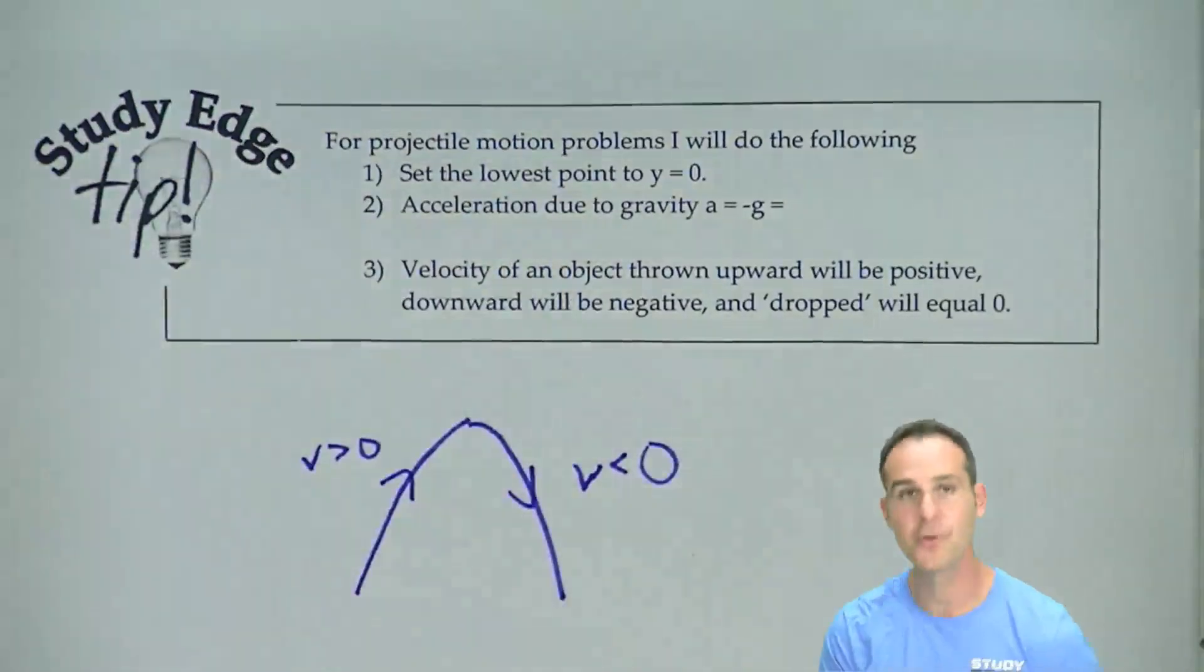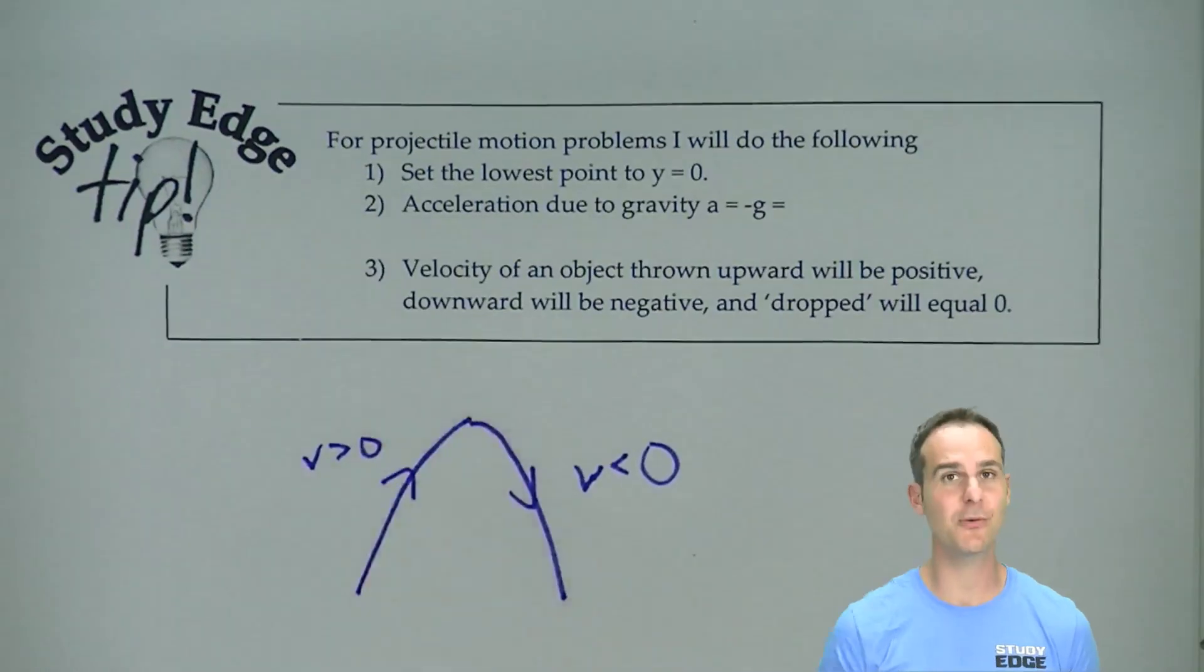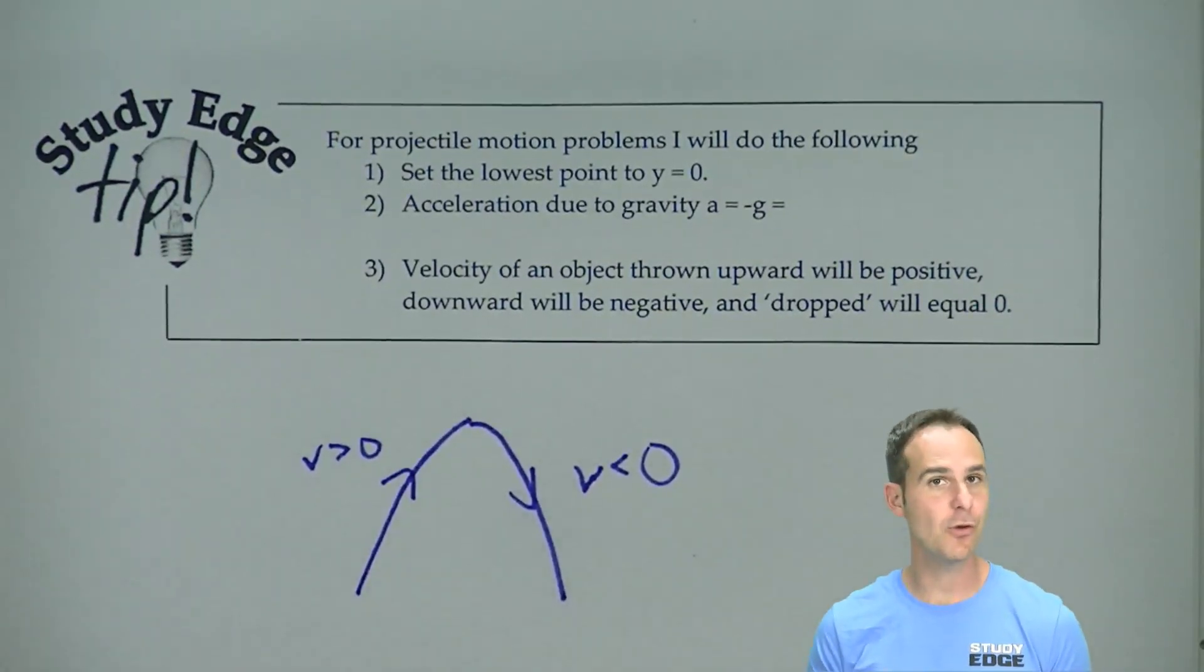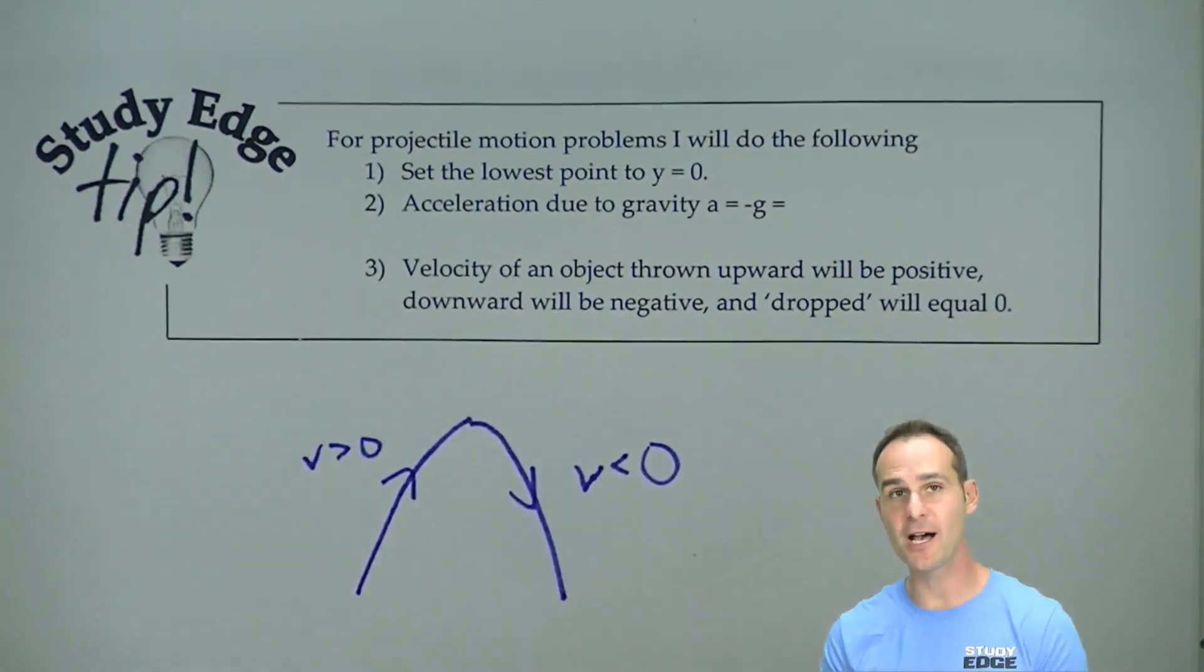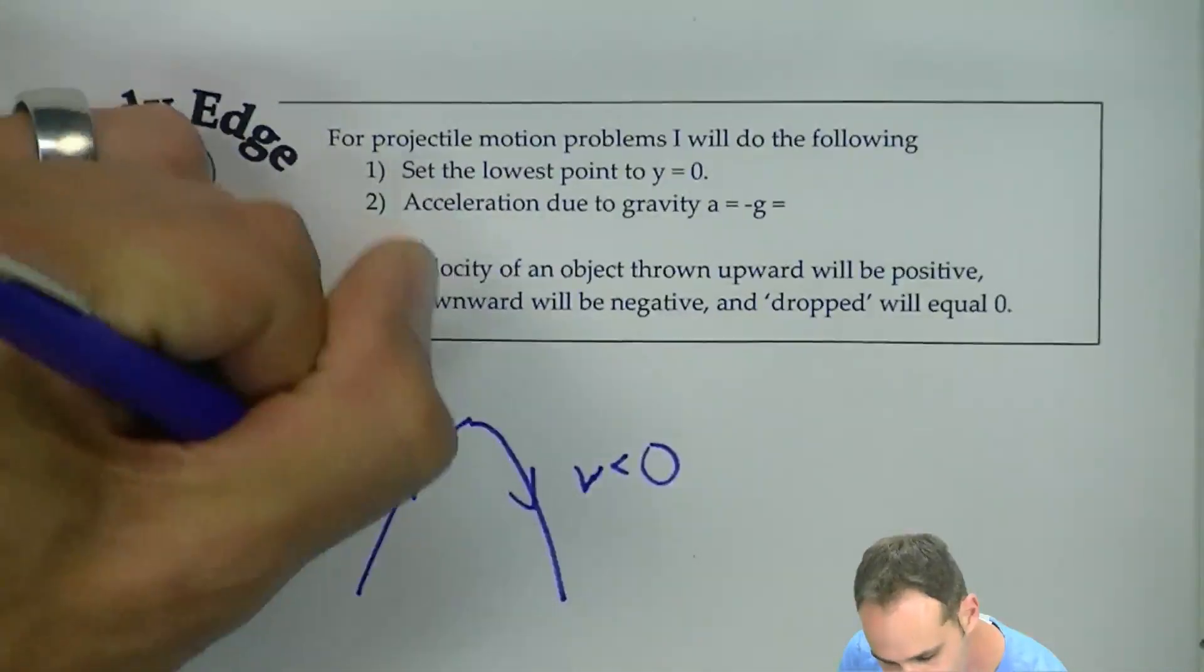Now, here's my question for you. When it's going up, is it speeding up or slowing down? It's slowing down, which means velocity and acceleration will have the opposite sign, making acceleration negative.